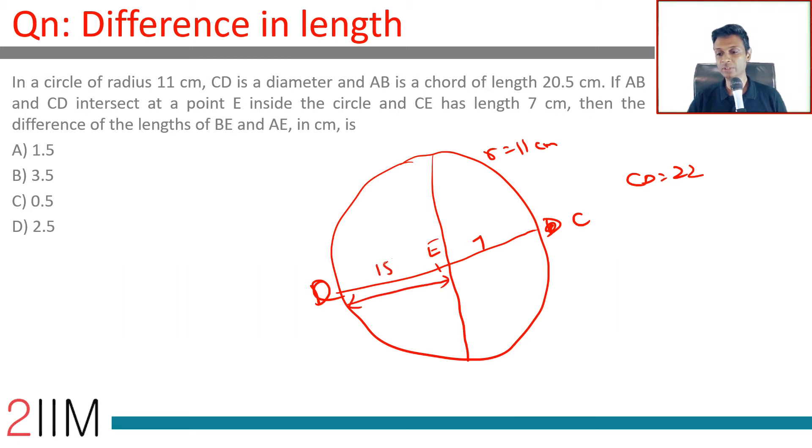AB is 20.5, and the difference in length between BE and AE, what is that equal to? The idea we use here is very important: AE into EB equals CE into ED. The product of rectangles formed by two intersecting chords is identical. This into this is this into this. You prove this using similarity, so try that, give it a shot.